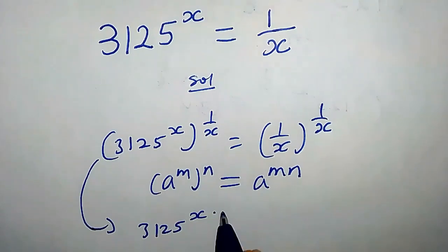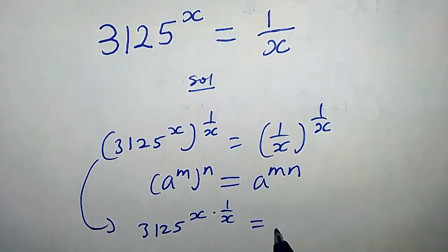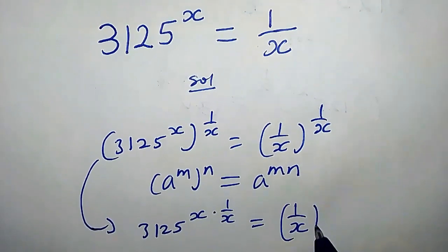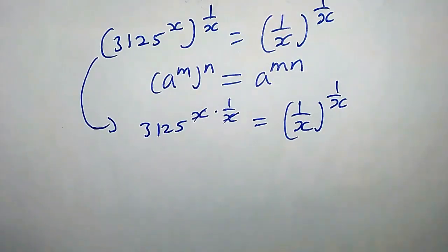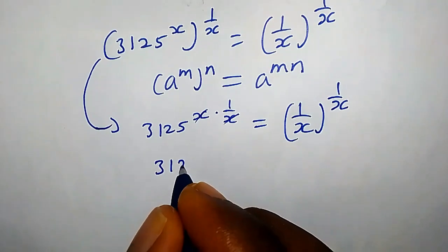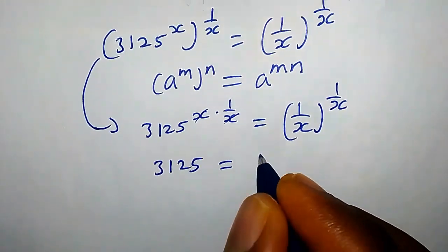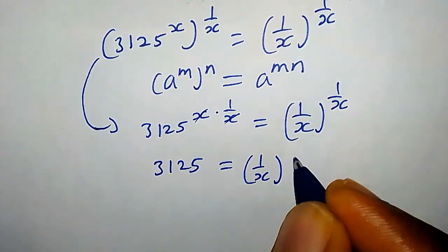Clearly this guy takes care of this, so we are left with 3125 equals 1 over x raised by 1 over x. 3125 is the same thing as 5 raised by 5, so this equals 1 over x raised by 1 over x.